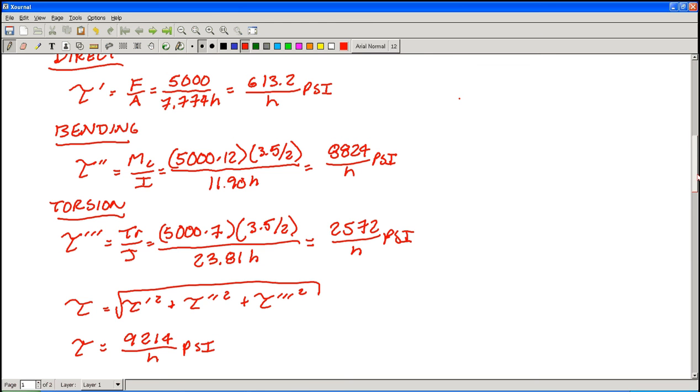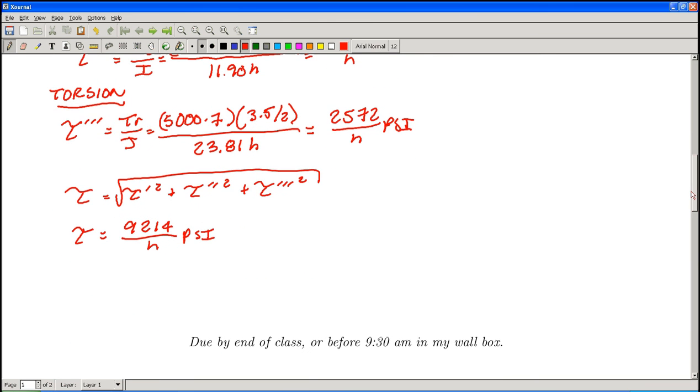All we have to do now is plug that into the factor of safety calculation. Factor of safety would be 2. The yield strength in shear for this material is 32,890, and we're dividing by that shear stress. Which gives a height required of 0.56 inches.